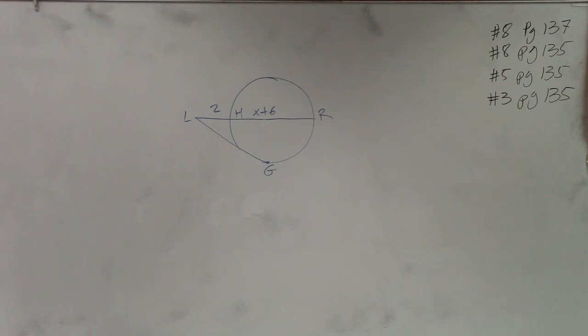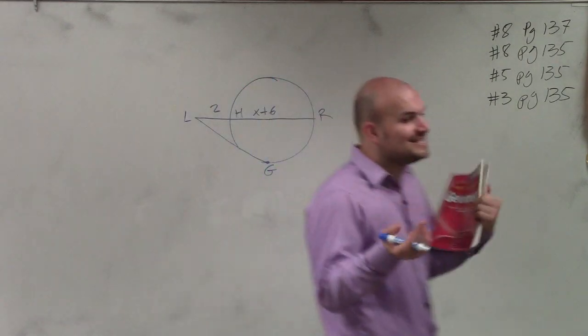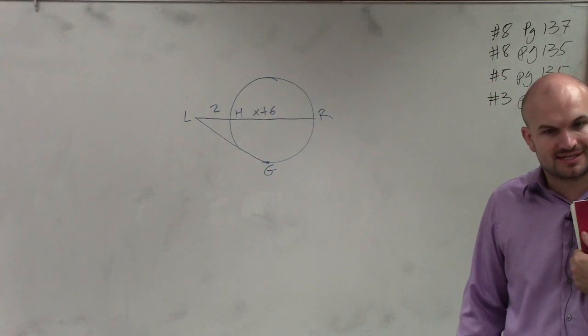Now we don't have two secant lines. In this example, we have a tangent and a secant line. So when we had a tangent and a secant line, there was a different formula that I gave to you last class period.